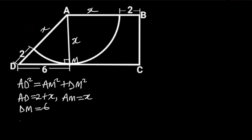If we plug in these values in this formula, it follows that (2 plus X) squared is equal to X squared plus 6 squared. Expanding the left side will give us 4 plus 4X plus X squared. So 4 plus 4X plus X squared is equal to X squared plus 36.